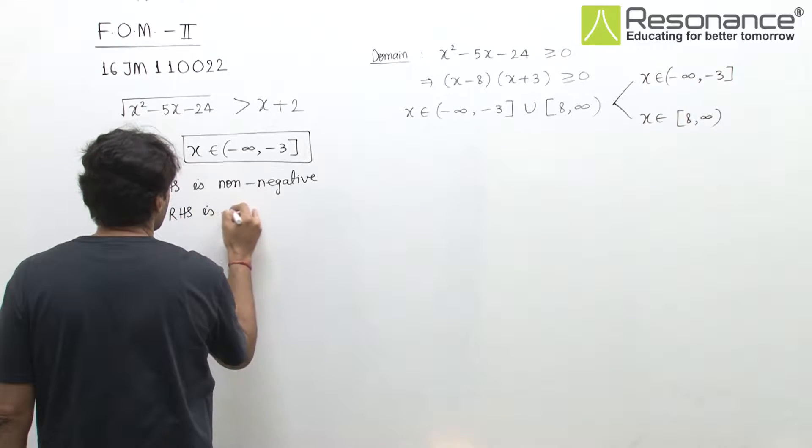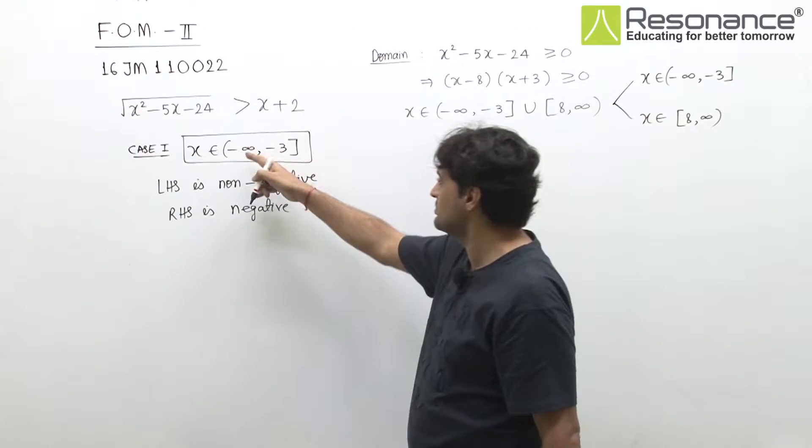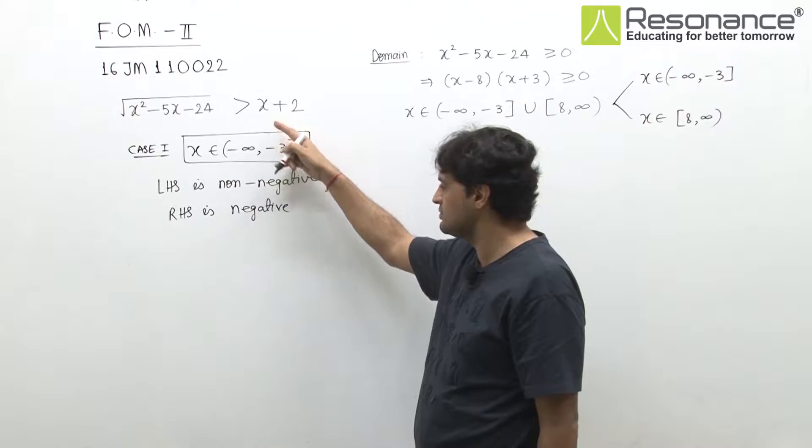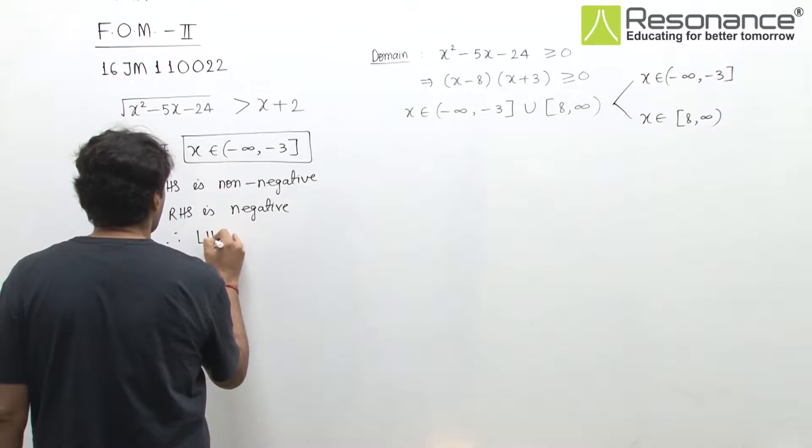While RHS is negative. If we put any value from (-∞, -3] in the RHS, the value is negative. So obviously LHS will always be greater.